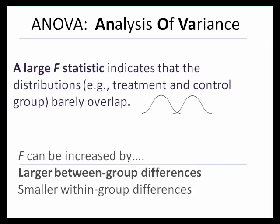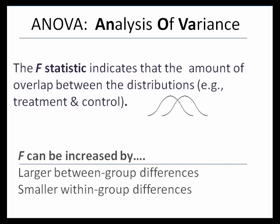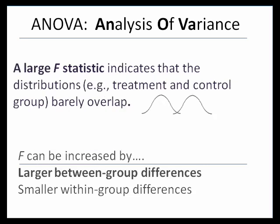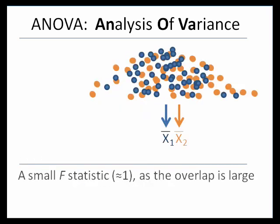The F-statistic indicates the amount of overlap between the distributions — for example, between a treatment and a control distribution. The less overlap between the two different distributions, the more certain we can be that our treatment had an impact. F can be increased by large group differences; that is, the vitamin water having a huge impact on IQ.